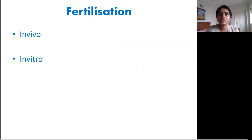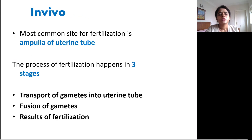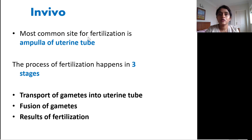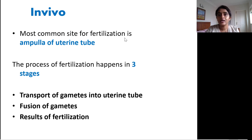There are mainly two types of fertilization: in vivo fertilization and in vitro fertilization. In vivo fertilization means the fertilization which is occurring inside a human body. We know that the most common site of fertilization in a female is the ampulla of the uterine tube.